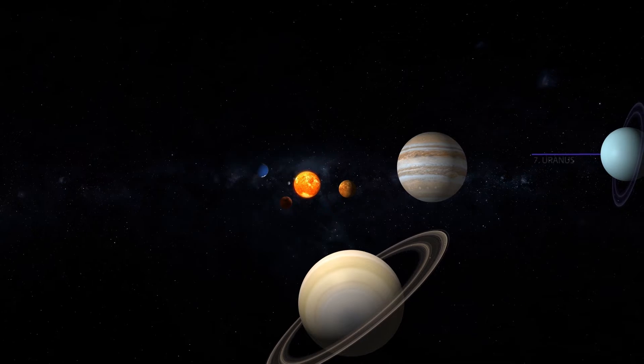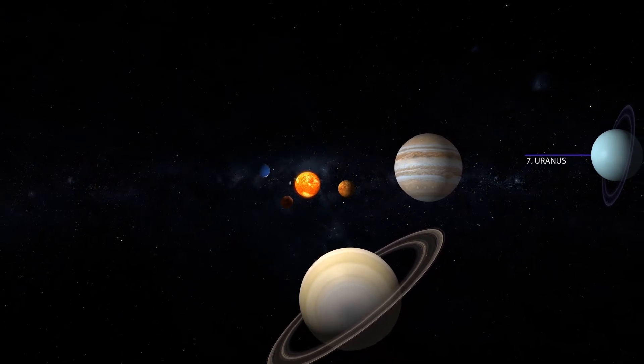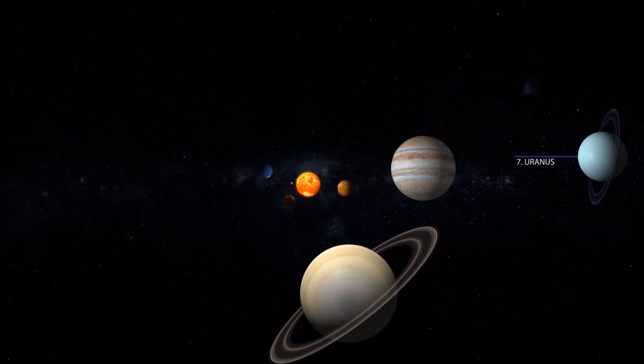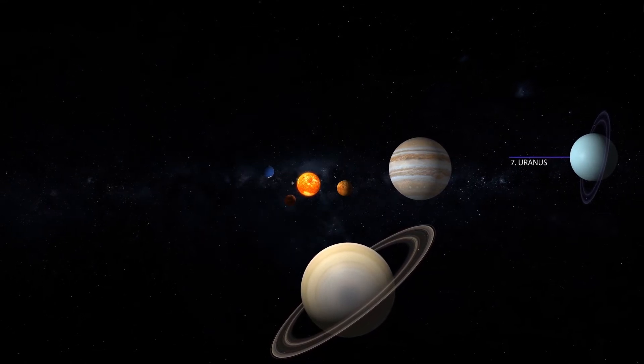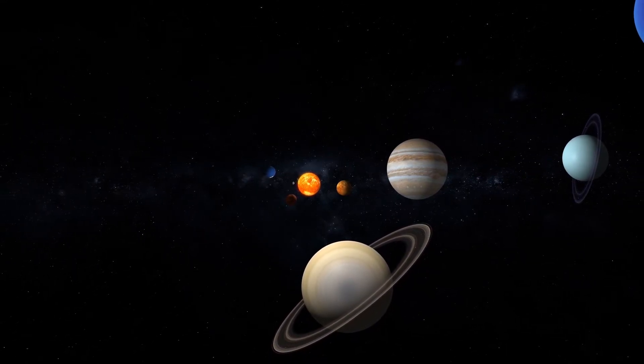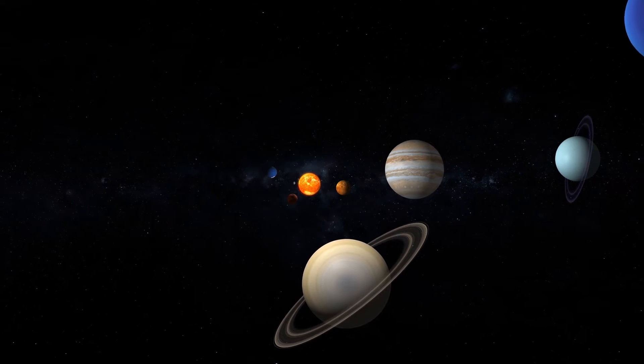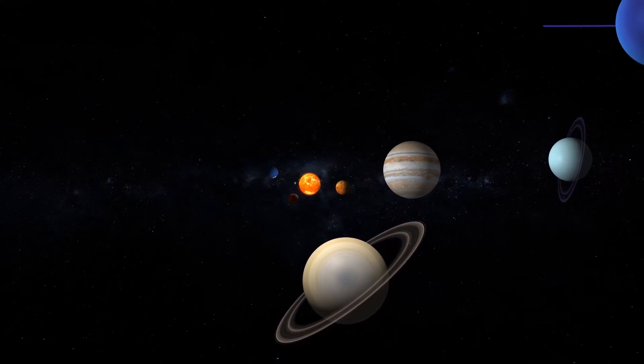The seventh planet, Uranus, is about four times wider than Earth. For comparison, if Earth were the size of an apple, Uranus would be the size of a basketball. Uranus is an icy planet. It also has rings similar to Saturn.